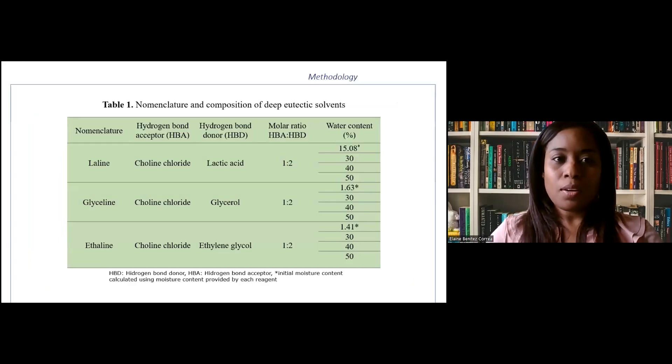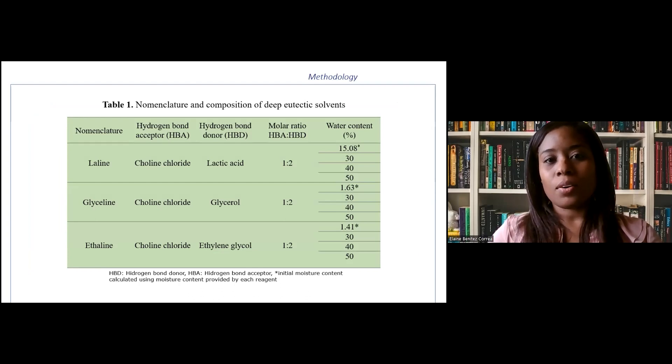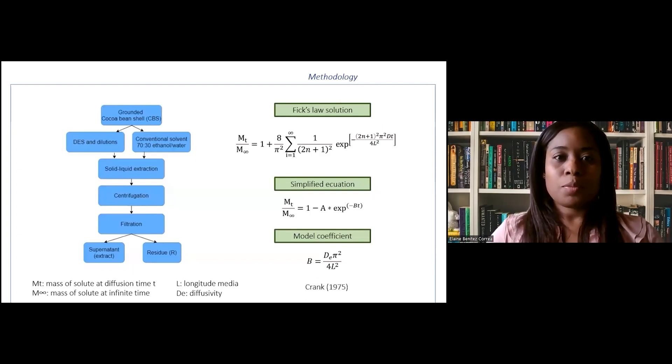First of all, deep eutectic solvents were prepared using choline chloride as hydrogen bond acceptor, and lactic acid, glycerol, or ethylene glycol were used as hydrogen bond donors, being called laline, glyceline, and ethylene respectively. All the mixtures were prepared in a 1:2 ratio and then diluted. Solid-liquid extraction was performed using ground cocoa bean shell as experimental unit and deep eutectic solvents and their dilutions.